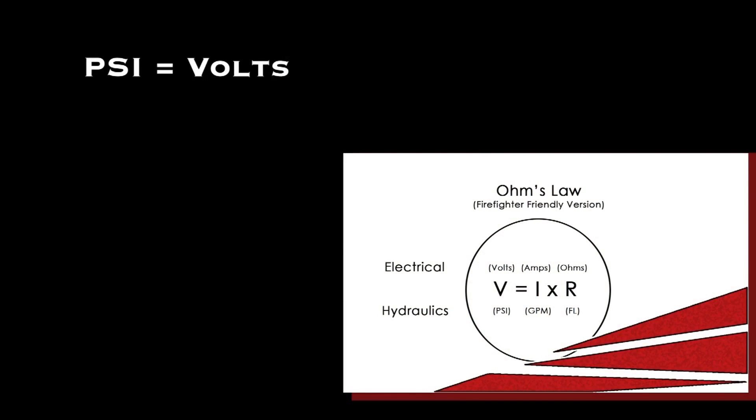That's the same with electricity. If you increase the voltage, it has a higher likelihood of overcoming the resistance in your body and getting that current through you. So once again, the pressure in the hose line, psi, is the same as the voltage. The gallons per minute is the same as current or amps. And friction loss or resistance is the same as the ohms in an electrical system.